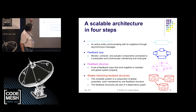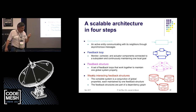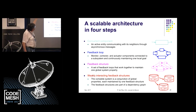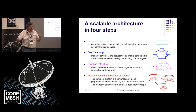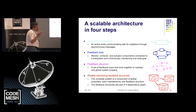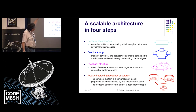I gave a name to this: a combination of feedback loops that together maintains one global property — I call this a feedback structure. We're not thinking in terms of single loops anymore, but in terms of feedback structures. There are four steps in this architecture: concurrent components sending messages asynchronously, feedback loops with monitor/corrector/actuator maintaining a local goal, feedback structures maintaining a system property with loops managing each other, and at the top level a bigger system with several feedback structures weakly interacting.